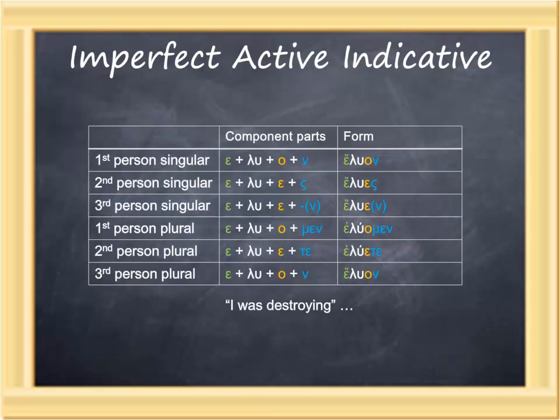The middle column of this chart shows the four pieces that go together to form the imperfect: the augment in green, the present stem in white, the connecting vowel in yellow, and the personal ending in blue.